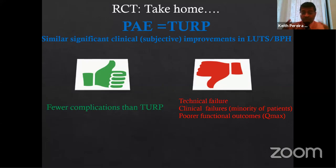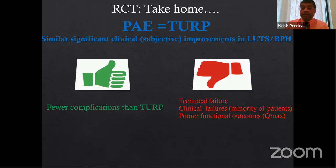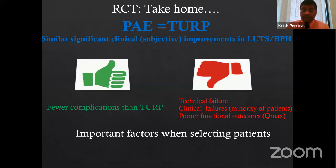The downside of PAE relative to TURP: technical failures are high. PAE is by far one of the most complicated IR procedures — unlike PAD work which involves straight lines going down, PAE requires climbing up into the pelvis with difficult curves. Technical failure can be almost 50% in the first few cases and decreases over time. Clinical failures can occur if you don't achieve technical success. Also, Qmax improvement — the flow improvement — is much better with TURP compared to PAE.